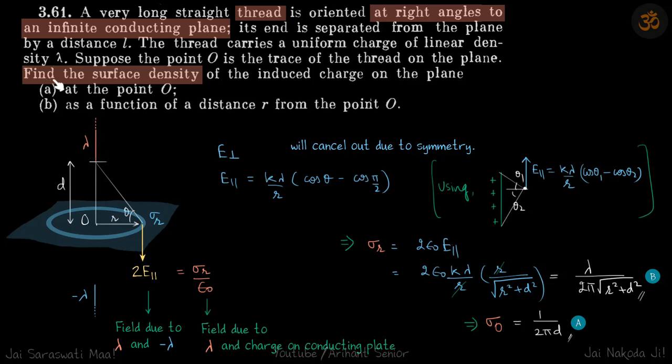We need to find the surface charge density on this plate at the point in the center and in general. Let's find the general case first, and then if we put the value of r equals 0, we will get the answer for the surface charge density at O.